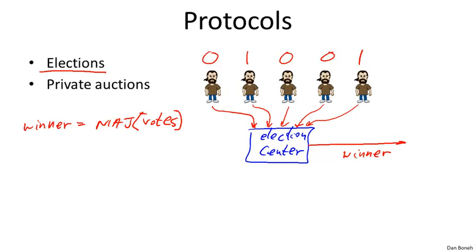The election center also verifies that each voter is allowed to vote and has only voted once. But other than that information, the election center and the rest of the world learn nothing else about any voter's vote other than the result of the election.